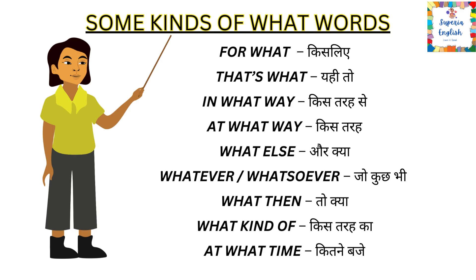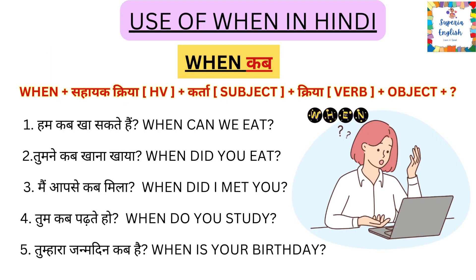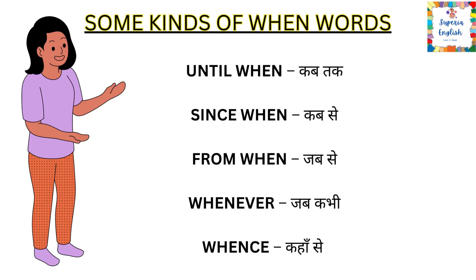You can take a screenshot to remember these words. The second WH word is 'when.' 'When' means 'kab' in Hindi. The sentence structure is the same; you just replace 'what' with 'when.' Example: Aap se kab mila — When did I meet you? Jab kabhi — whenever.